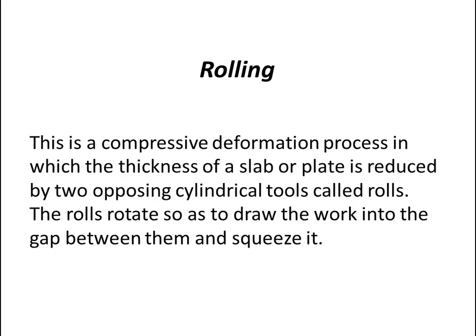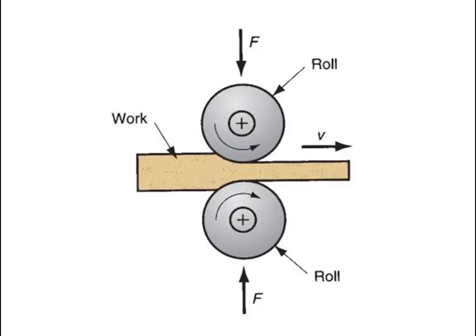The rolling process is a compressive deformation process in which the thickness of a slab or plate is reduced by two opposing cylindrical tools called rolls. The rolls rotate so as to draw the work into the gap between them and squeeze it. In the diagram, the upper roll rotates in an anti-clockwise direction and the lower roll rotates in a clockwise direction. Because of the rotation of these two rolls, the work part moves forward and the volume is squeezed significantly.